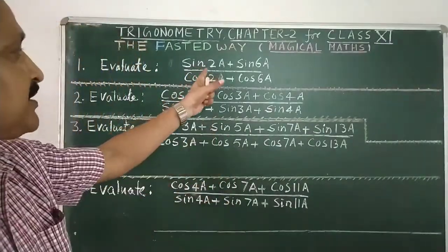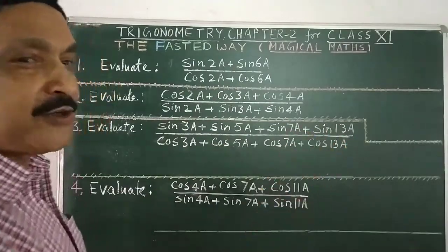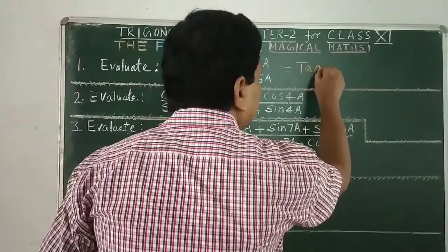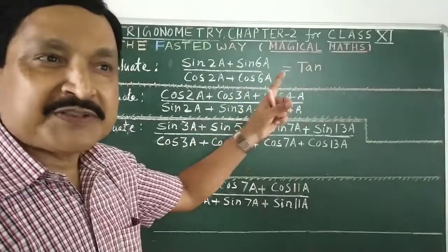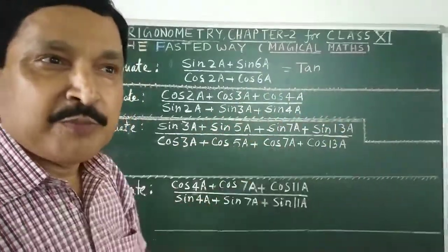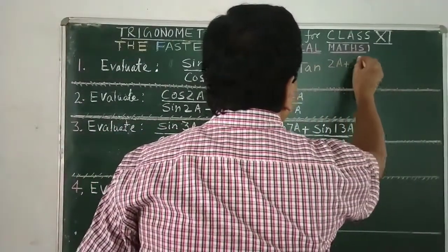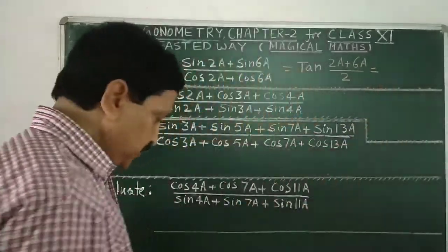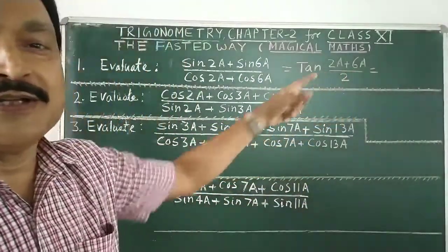Just know. Just see sin by cos. Sin by cos. Sin by cos is called tan. This is known to all of you. So write tan. The answer is going on. Write tan. So this is tan. After that, what to be done? There are 2 angles. 2A and 6A. So take average of 2 angles. Add 2A, 6A and divide by 2. This is called average you know from the junior classes. 2A plus 6A divided by 2. Now it will be very easy. 8A by 2. Finally the result is 4A.